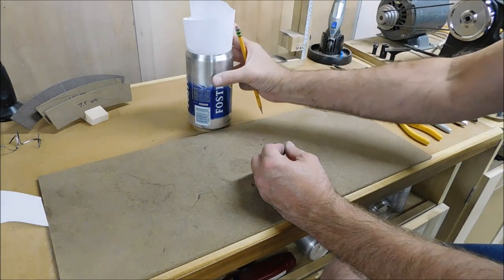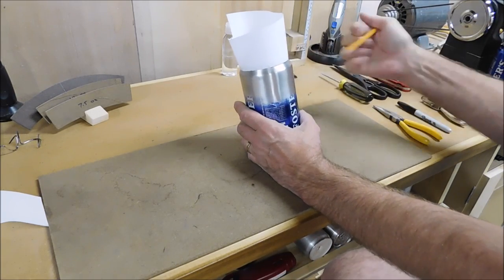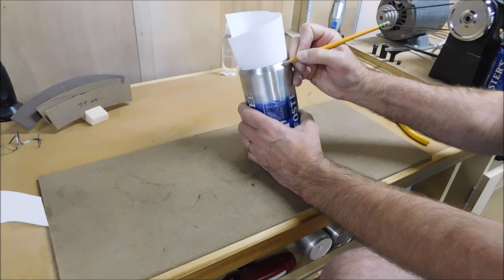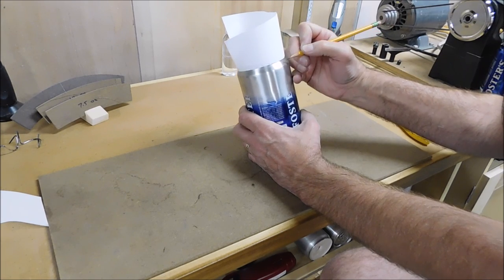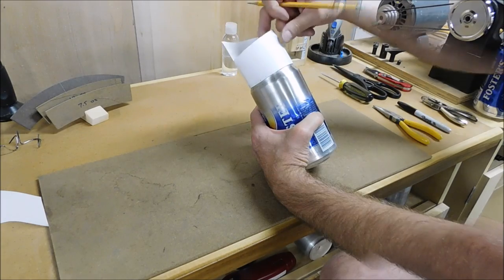Put that over the top of the Foster's can and now I can mark the intersections for those burner holes. 25 holes.